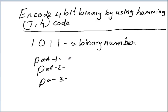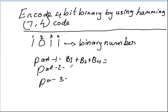Let's label the data bits as b1, b2, b3, and b4. For the first parity bit, we need to add b1, b2, and b4. For the second parity bit, we need to add b1, b3, and b4. And for parity bit three, we need to add b2, b3, and b4.